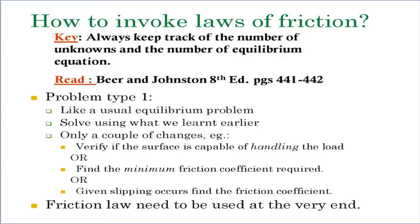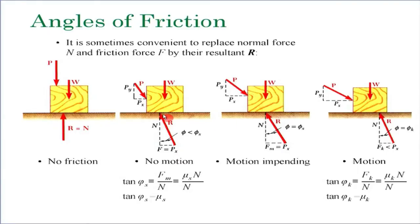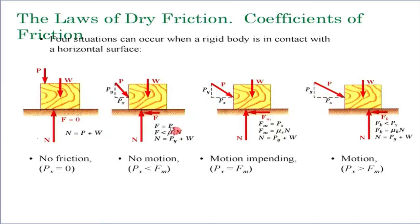Now let us go to actual problem solving and see how to invoke the laws of friction. Just because there is a friction resistance acting does not mean the friction force is equal to mu_s times N or mu_k times N. mu_s times N only applies for impending motion; mu_k times N applies only when there is finite relative motion. Otherwise, you cannot immediately say what the value of F is. A common student mistake is to set F equal to mu times N the moment they see F — that is only true for impending or finite motion.